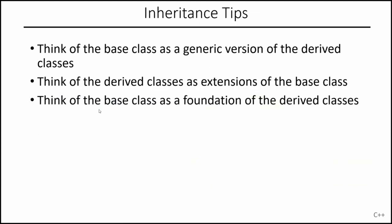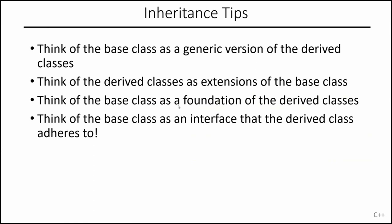So that is what an interface is. Let's go back to inheritance tips. We talked about three types: the base class as a generic version of the derived class; the derived class as an extension of the base class; and the base class as a foundation the derived class builds upon. Here's a fourth: you can think of the base class as an interface that the derived classes must adhere to and implement.